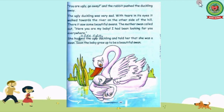Soon the baby grew up to be a beautiful swan. Okay kids, here we have read that when all the animals refused to be the ugly duckling's family, it walked towards the river on the other side of the hill. There it saw many beautiful swans. One of the swans hugged the ugly duckling and told it that she was its mother. The mother swan made the duckling realize that it was not a duckling but a baby swan. Now the baby swan was very happy, and soon the baby grew up as a beautiful swan.